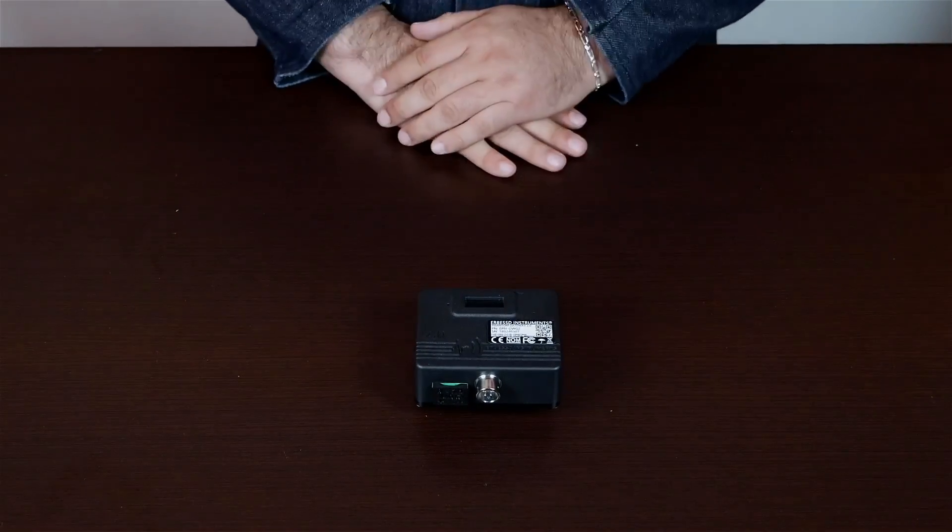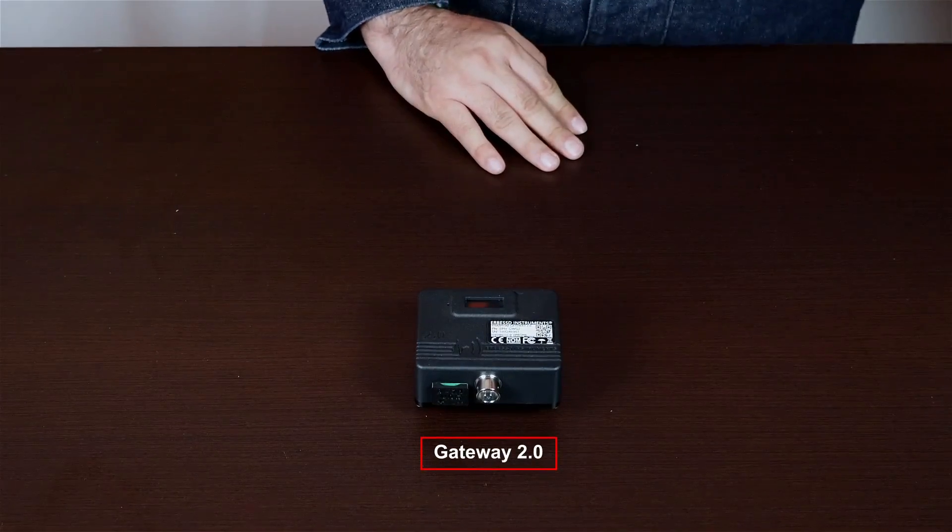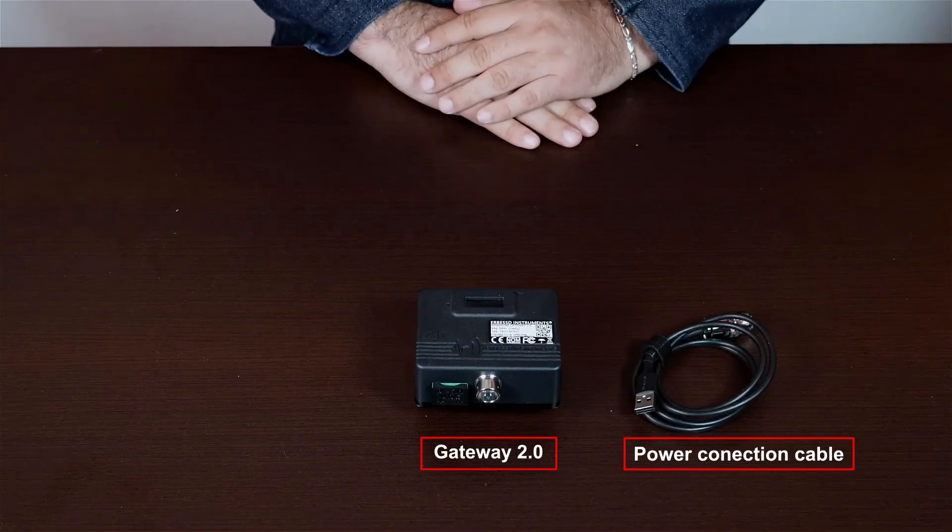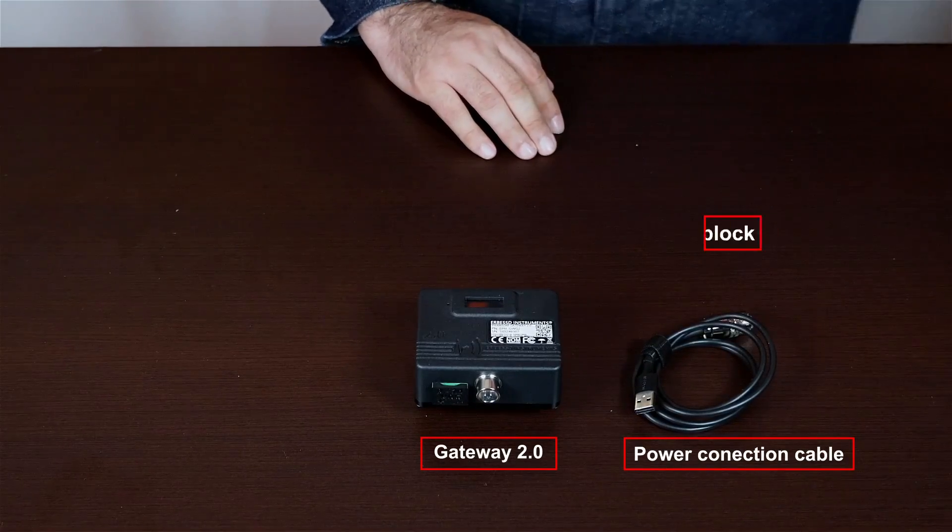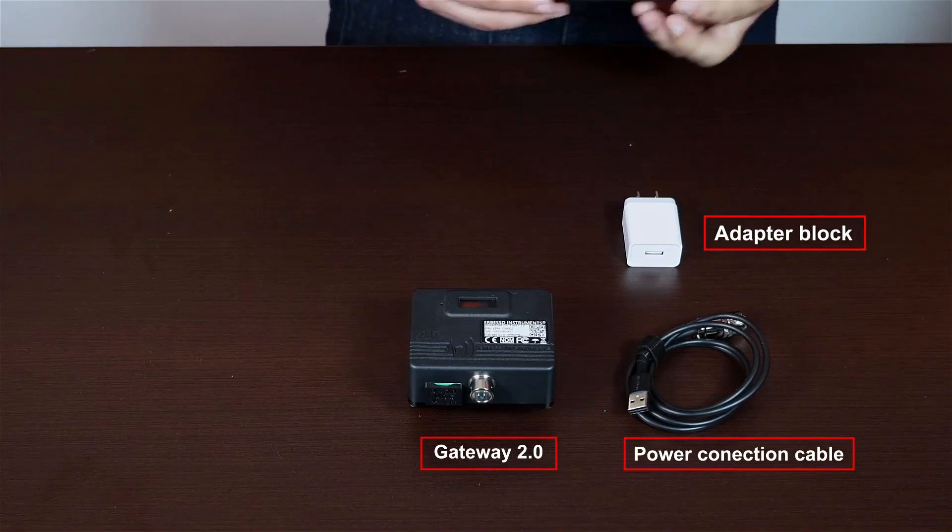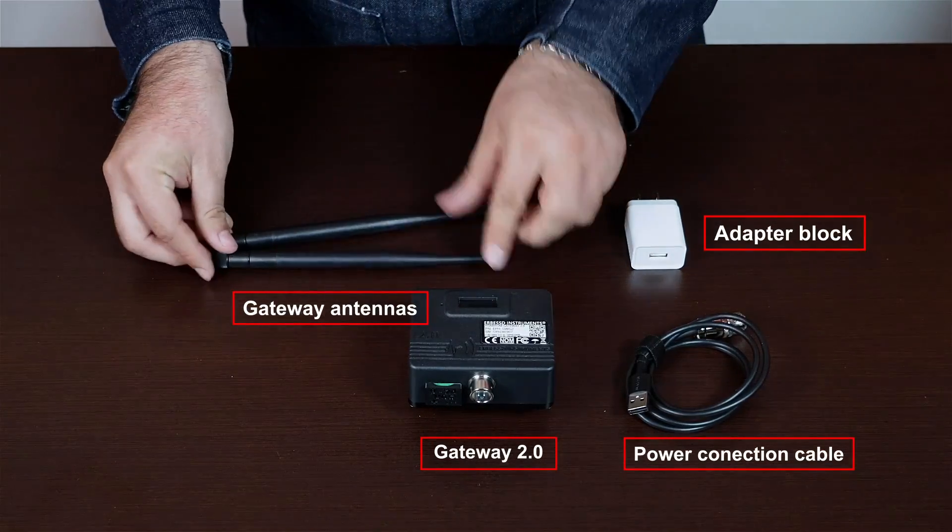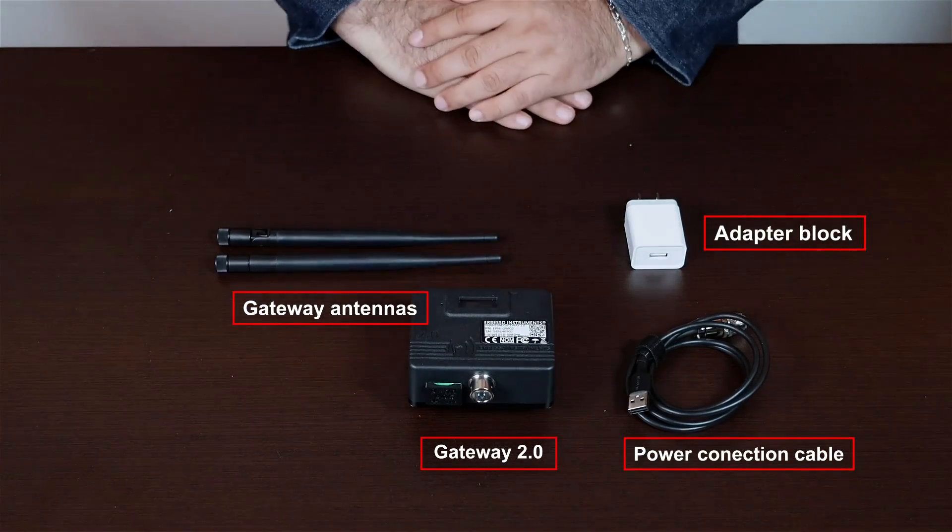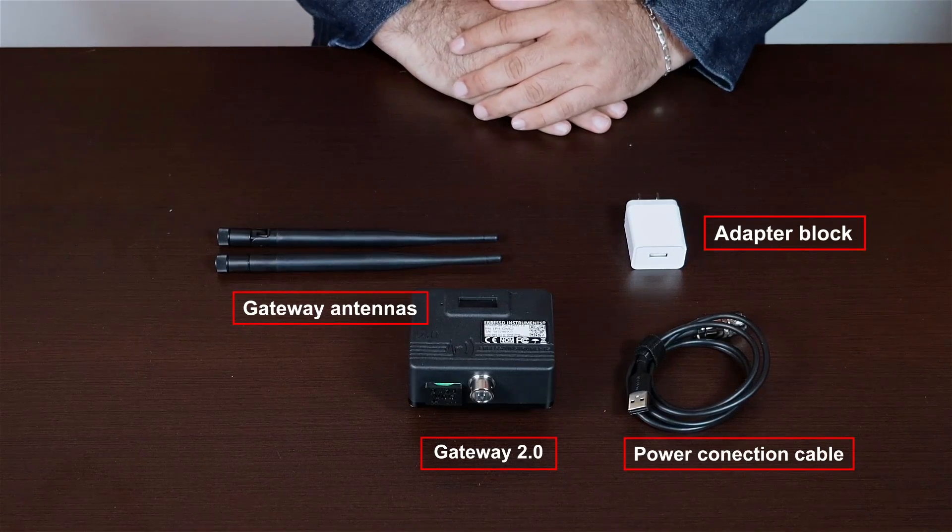The package should include your gateway, the power connection cable, an adapter block, and the gateway antennas. We'll discuss each of these components in detail.